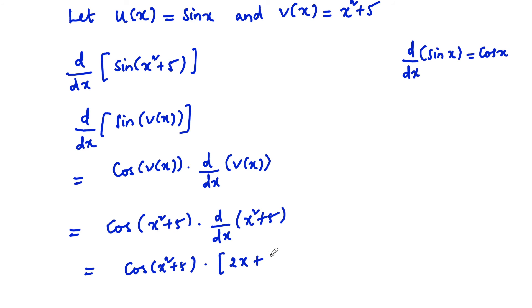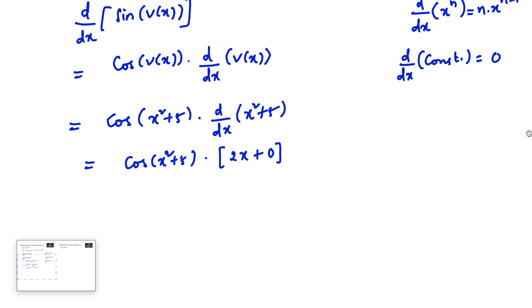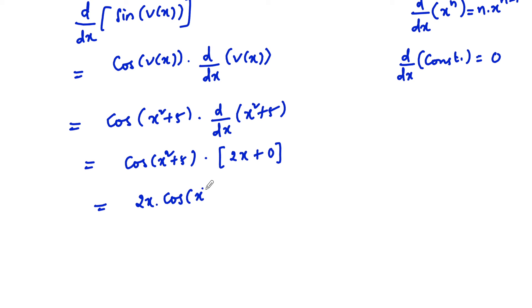The differentiation of 5 is 0, since d/dx of a constant is 0, and d/dx of xⁿ = n·x^(n−1). So the final answer is 2x · cos(x² + 5), which is the differentiation of sin(x² + 5).